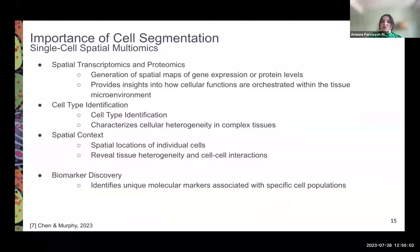Why is cell segmentation so important? Cell segmentation allows us to generate a spatial map of gene expression or protein levels, so it's very critical in providing insights into how cellular functions are orchestrated within the tissue microenvironment. In addition, cell segmentation allows us to segment and distinguish different cell populations based on their molecular signatures and spatial distributions, and this is crucial for characterizing cellular heterogeneity in complex tissues. Cell segmentation also provides spatial locations of individual cells within the tissue sample, which reveals tissue heterogeneity and cell-to-cell interaction, giving us insight into the spatial context of the tumor microenvironment.